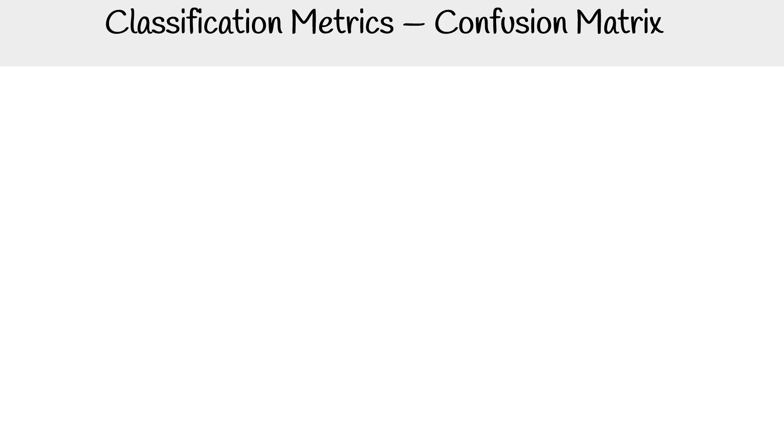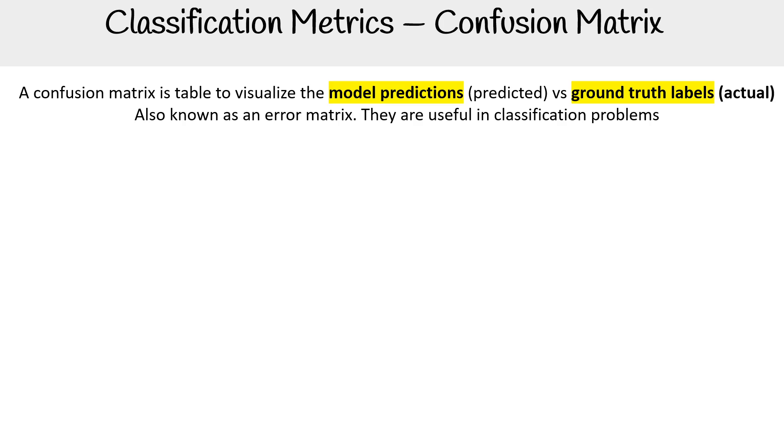Hey, this is Andrew Brown from Exam Pro. We're looking at the confusion matrix, a table to visualize model predictions (predicted) versus ground truth labels (actual), also known as an error matrix. They're useful for classification problems to determine if our classification is working as we think it is.